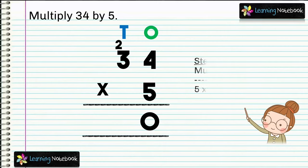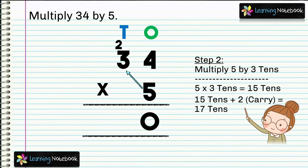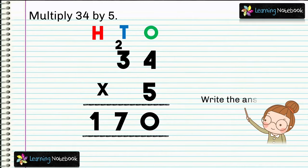In step two, multiply 5 by 3 tens — 5 into 3 tens equals 15 tens. We also have 2 as carry due to regrouping in step one. So we add: 15 tens plus 2 carry equals 17 tens. We write 17 in the answer — 7 comes at the tens place and 1 comes at the hundreds place.